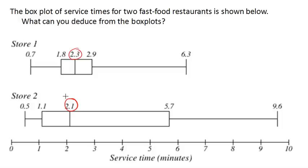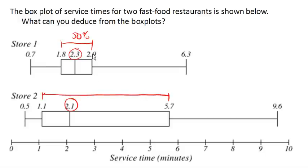However, we can also notice the range of values. These quartiles divide the data into quarters, so 50% of the data falls within the box. At store one, 50% of the time you're served between 1.8 and 2.9 minutes. At store two, 50% of the time you're served between 1.1 and 5.7 minutes. So the second store is a lot less consistent in service time.